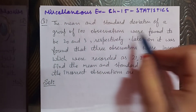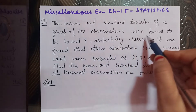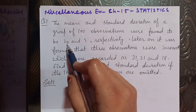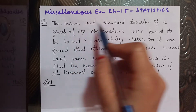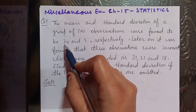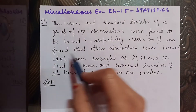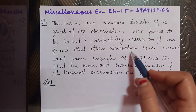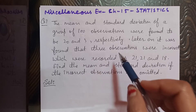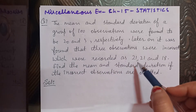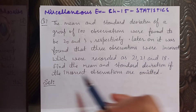Question number 7: Mean and standard deviation of a group of 100 observations were found to be 20 and 3 respectively. Later on, it was found that 3 observations were incorrect, which were recorded as 21, 21 and 18.